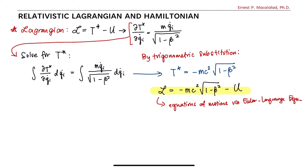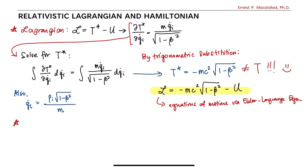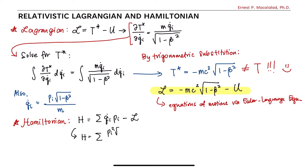It is important to note that t-star, as mentioned earlier, is not the same as the relativistic kinetic energy. From the expression of the relativistic momentum, qi-dot in terms of pi is written as qi-dot equals pi times the square root of 1 minus beta squared over m. Therefore, the Hamiltonian, calculated as the sum of qi-dot times pi minus L, can now be written as H equals the sum of pi squared times the square root of 1 minus beta squared over m, for all i's, plus m c squared times the square root of 1 minus beta squared, plus U.